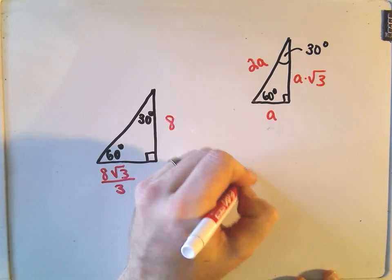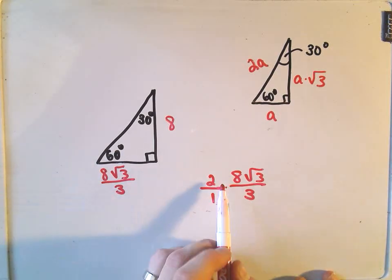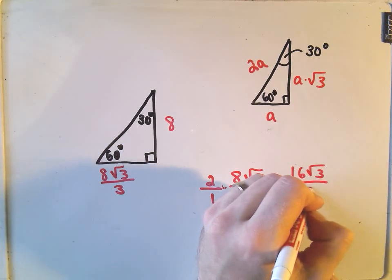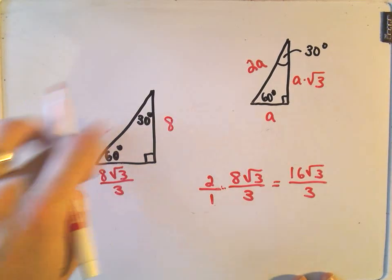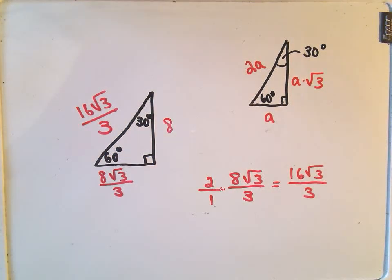Lastly, if we know the side opposite 30 degrees is 8√3/3, we double it to get the hypotenuse: 2 × (8√3/3) = 16√3/3. Now we know all the missing values from knowing only one side. If you can remember the derivation you'll understand where the formulas come from, and if you do forget them you'll be able to reproduce them relatively quickly. I hope this helps — if there are any questions or comments, feel free to post them.